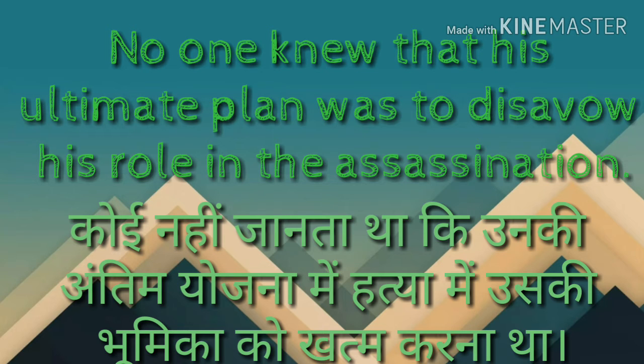For example: no one knew that his ultimate plan was to disavow his role in the assassination. Koi nahi janta tha ki unki antim yojna mein hatya mein uski bhoomika ko khatam karna tha.